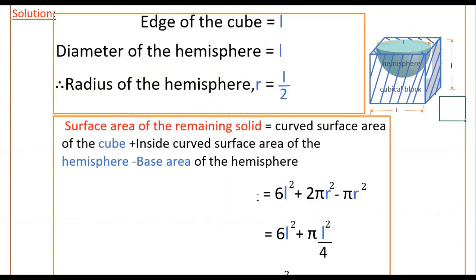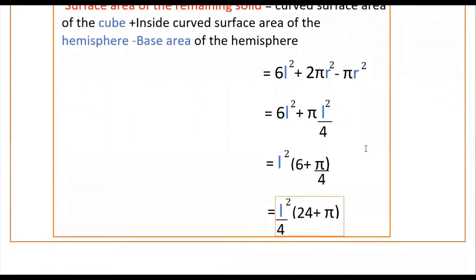The curved surface area of the cube is 6L². The inside curved surface area of the hemisphere is 2πR². The base area is πR². So total = 6L² + 2πR² − πR² = 6L² + πR². Substituting R = L/2, so R² = L²/4: total = 6L² + π(L²/4) = L² (6 + π/4). Taking LCM of 4: = L²/4 × (24 + π).